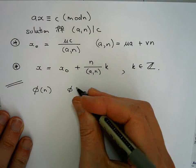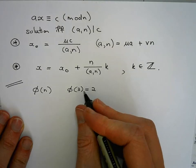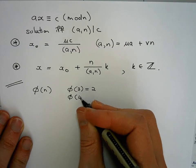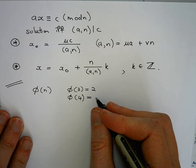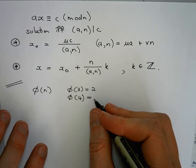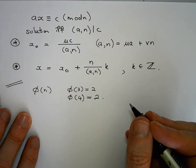So for example, phi of 3 would be 2 because 2 and 1 are relatively prime to 3. Phi of 4, which would we count, we'd count 1, would be relatively prime to 4, 2 wouldn't be, 3 would be, so there we'd also get 2.